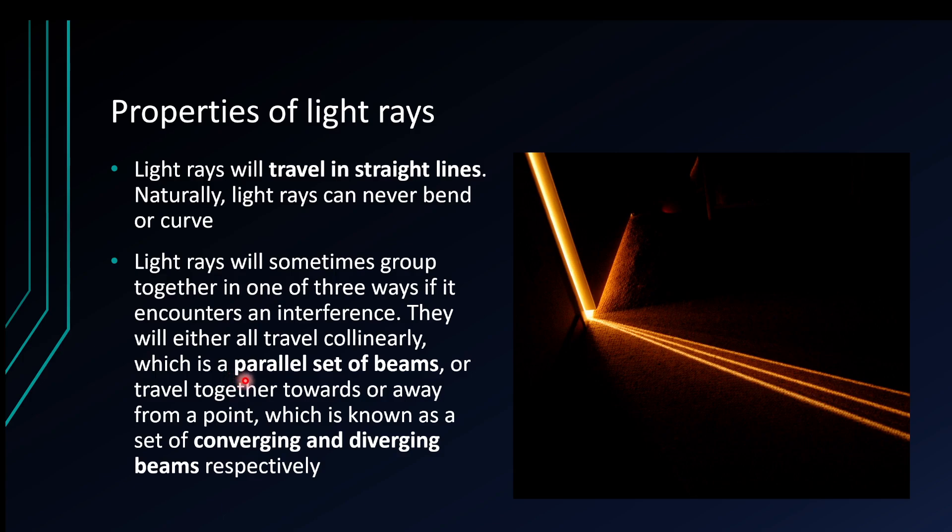If they travel collinearly, they are known as a parallel set of beams. If the three of them are going within the same direction, like parallel lines for instance. Then depending on if they're going away or going towards a point, it can be converging or diverging.